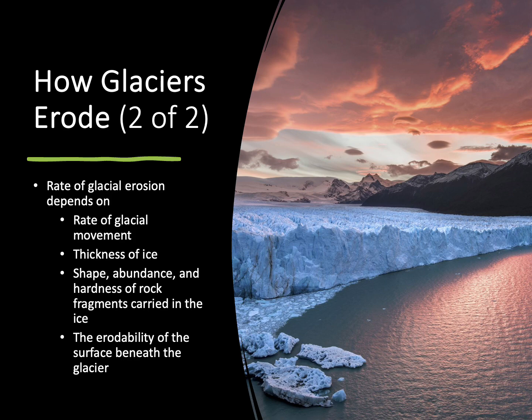Finally, it all depends on the erodability of the land beneath the glacier. If it's on top of solid granite — an igneous rock and one of the hardest rocks on our planet — it's not going to erode very much. But if we have this glacier on top of limestone, which is a very soft rock like what we have here in Florida, the rock is going to erode a lot more and will just break as the glacier flows over it.